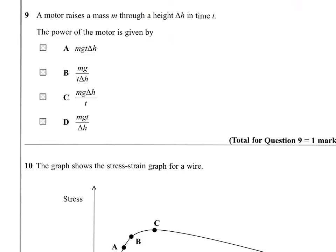Question 9. A motor raises a mass M through a height delta H in a time T. The power of the motor is given by one of these expressions. Well, power is work over time. And the work done here is going to be the force on the object times the distance we've moved it in that direction. And we're dividing then by T. Equations are your friend. Okay, so answer C.